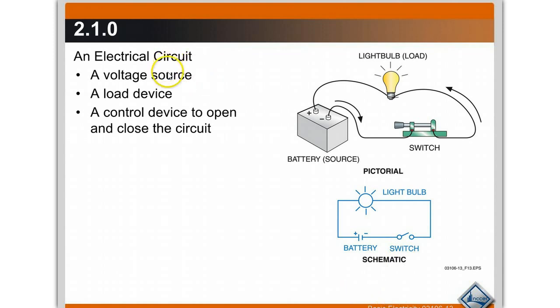You have a voltage source, you have a load device, you have some type of switching or control device, and then you have conductors to carry the current. For a complete circuit, you need all four of these components.